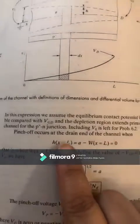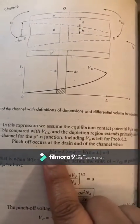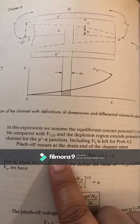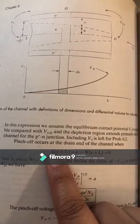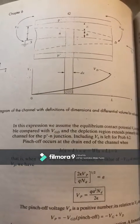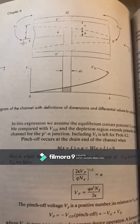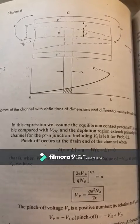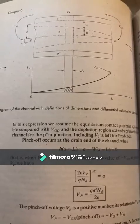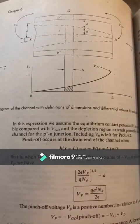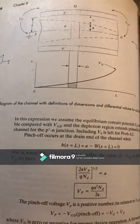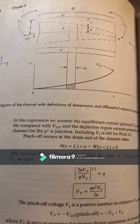Pinch-off occurs at the drain end of the channel when h equals a minus w. This h is the distance from the center of the conducting channel to the depletion region. Pinch-off occurs when a minus w equals zero.